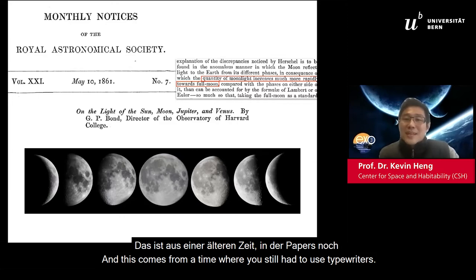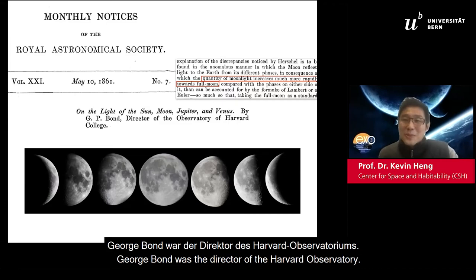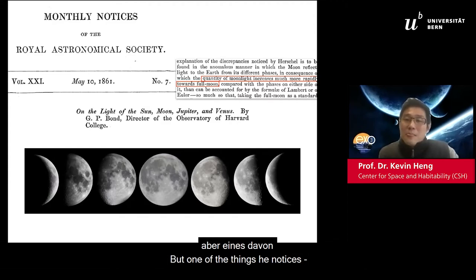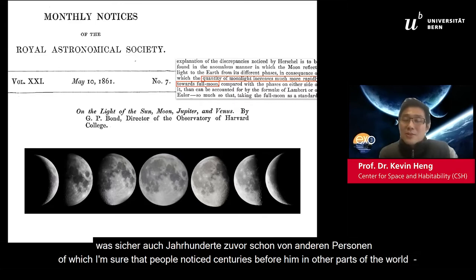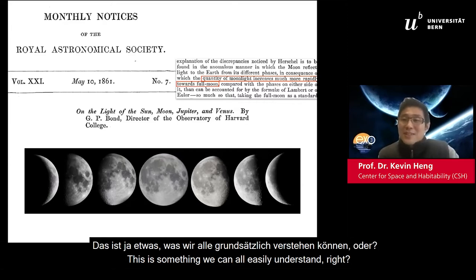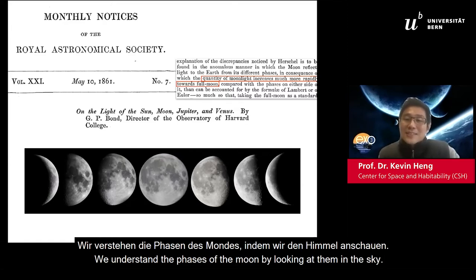This comes from a time when papers were so old that you had to use typewriters and they had to be in physical form. George Bourne was the director of the Harvard Observatory. He noticed something about the phases of the moon — this is something we can all easily understand by looking out in the sky.